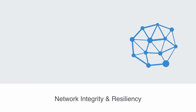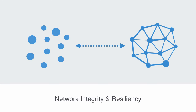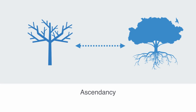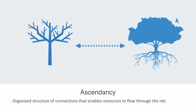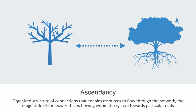Network analysis is a key tool for modeling the resilience of an ecosystem in terms of the integrity of its network of connections. Connectivity within networks can both enable robustness and represent pathways for disaster spreading — it works both ways. On the beneficial side, the resiliency and robustness of the network can be correlated to the flow through the system as described by the theory of ascendancy, where ascendancy is defined as the level of functionality of the ecosystem's trophic network — essentially the organizational structure of connections that enables resources to flow through the network.